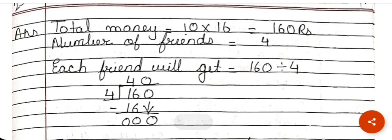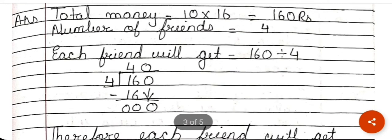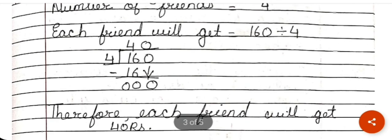When I divide 160 by 4, I look at the first digit, 1. Since 1 is smaller than 4, it cannot be divided. So I take the first two digits: 16. In the 4-times table, 4×4=16. I write 4, subtract 16: 6 minus 6 is 0, 1 minus 1 is 0. I bring down the 0, so the answer is 40. Every friend will get 40 rupees.